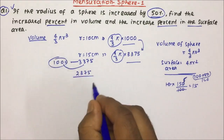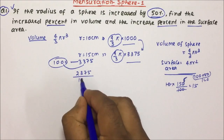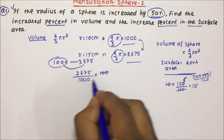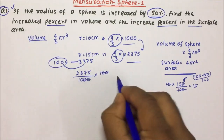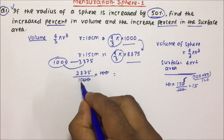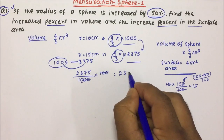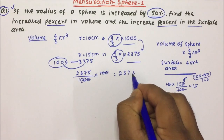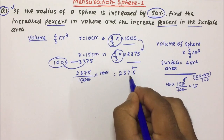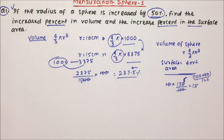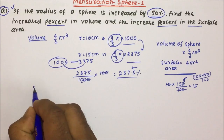It is increasing from 1000. So the percentage increase is 2375 divided by 1000 into 100. The 20s cancel, leaving 10 in the denominator. After one decimal place, the volume will increase by 237.5 percent.